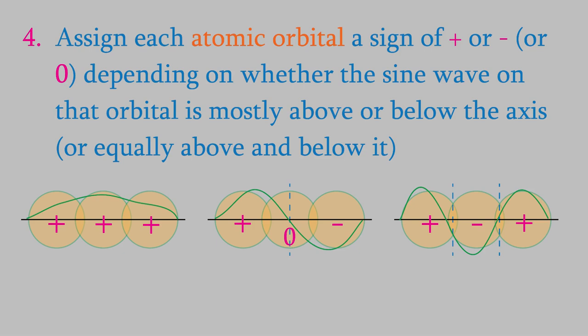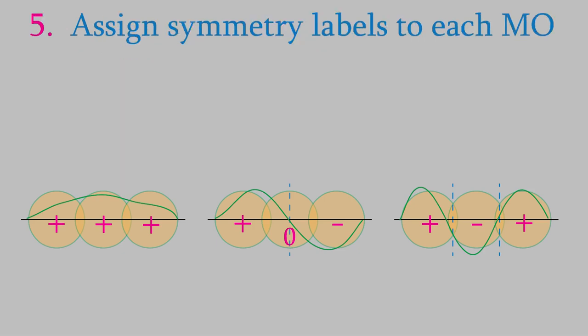Now that we know how the sign of the wave function changes for each MO, we can give the MOs a symmetry label. Each orbital is connected by a sigma bond, so that's the first part of the symbol. The signs in the first MO are symmetric with respect to the center of the molecule. As you might remember from video 28, that makes this a gerade orbital, so it gets a subscript g. The signs in the second MO are opposite with respect to the center of the molecule, so this is an ungerade orbital, which means this MO gets a subscript u. Finally, the last MO is symmetric with respect to the center, so it's another gerade orbital.